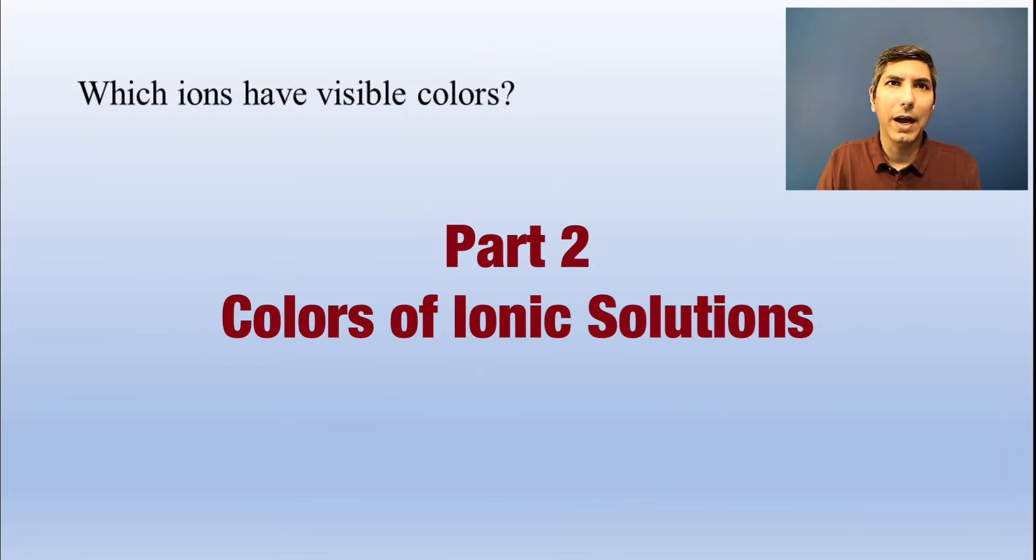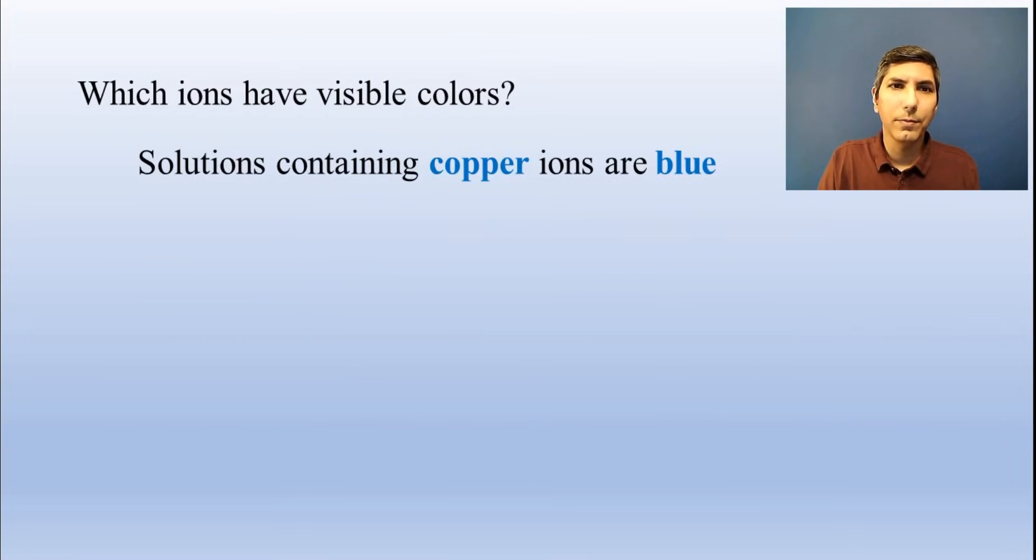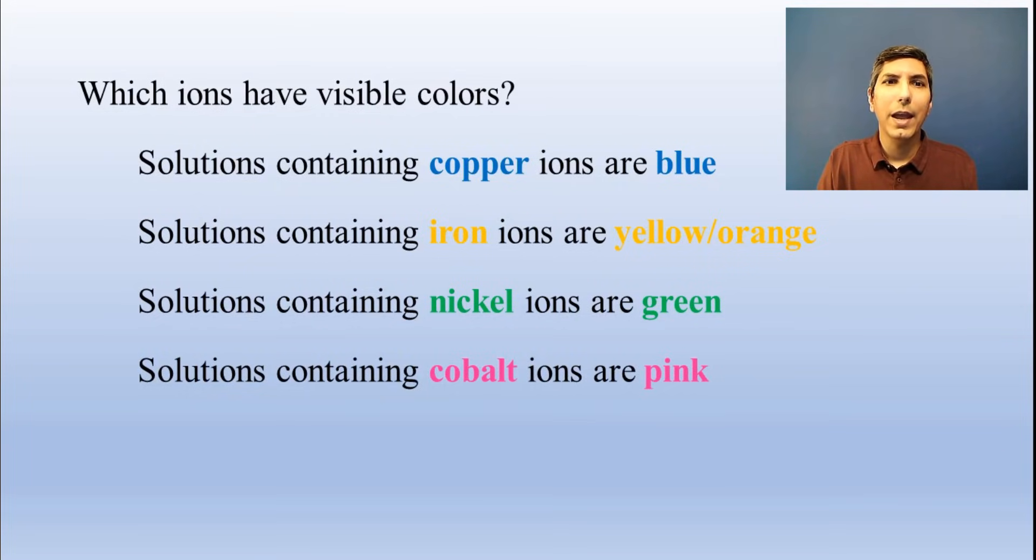Know the colors of some ionic solutions. Copper ion solutions are blue, iron ion solutions are yellow or orange, nickel ion solutions are green, cobalt ion solutions are pink, and chromium ion solutions are yellowish or orange in color.